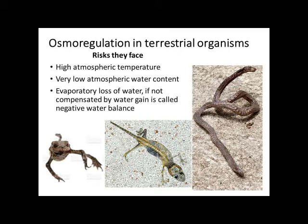So what is the peculiarity of a terrestrial environment? It has got higher atmospheric temperature and a low atmospheric water content. Since the atmospheric temperature is high and the humidity is low, the terrestrial animals will have a tendency to lose water through evaporation. Osmotic loss of water is negligible because they are not living in an aquatic environment, but what they face is an evaporative threat.